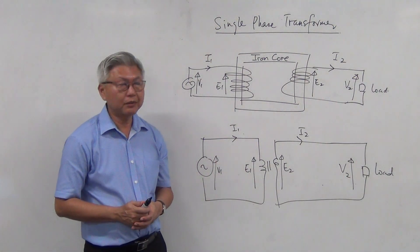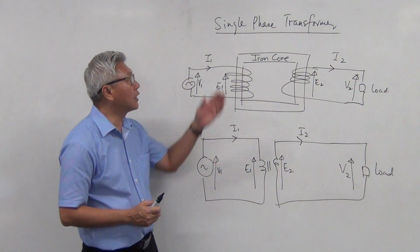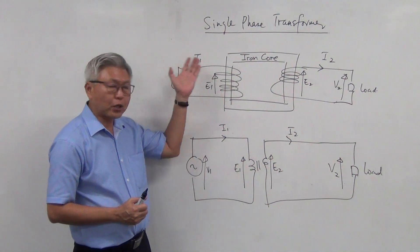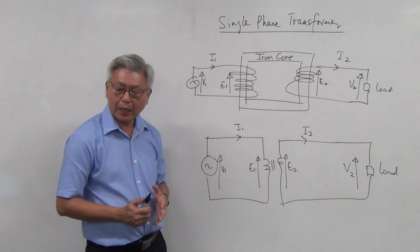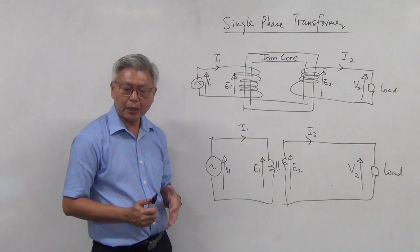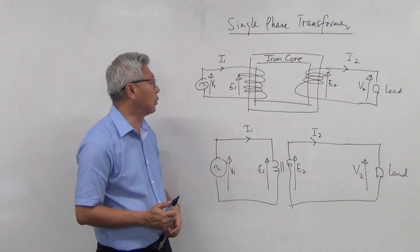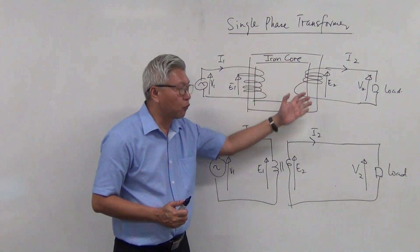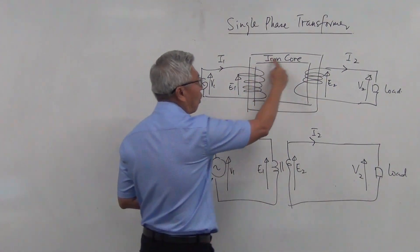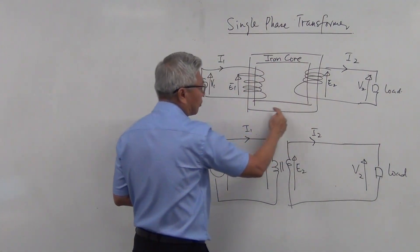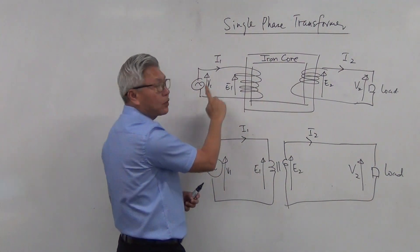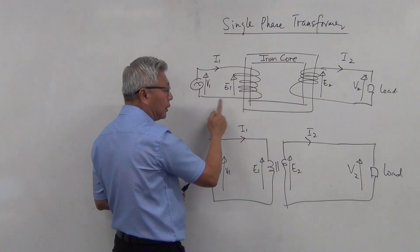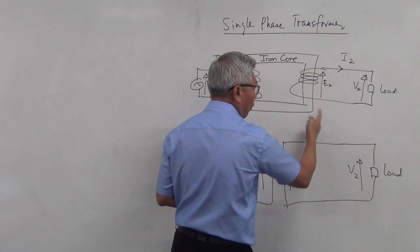Welcome to our new topic. This is a single-phase transformer. A transformer is an AC equipment. The construction of a transformer is that you need an iron core and two coils of wire — one is called a primary coil, the other one is called a secondary coil.